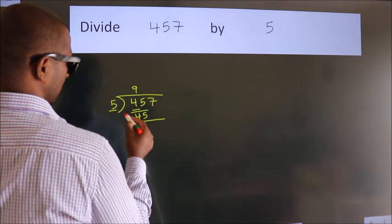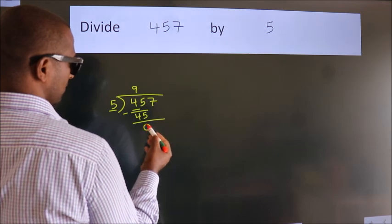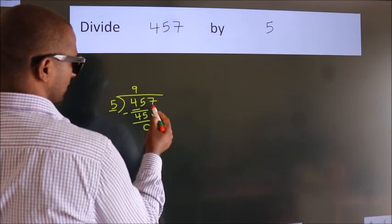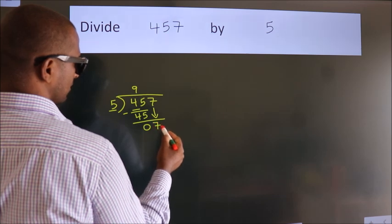Now we should subtract, we get 0. After this, bring down the beside number. So 7 down. So 7.